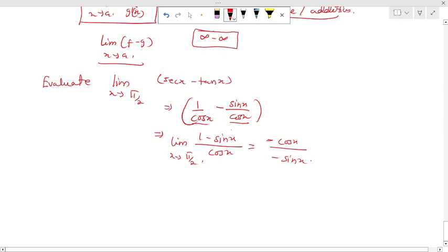Is that not it? Obviously this will cancel this, and I'm going to get cos(x) over sin(x). Now, limit as x approaches π/2 of the expression, which is cos(x) over sin(x).